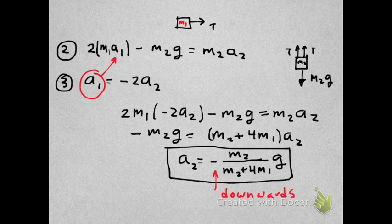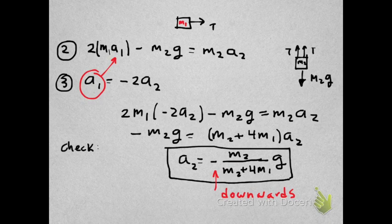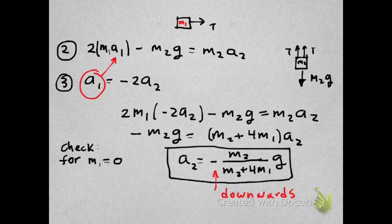Notice that we got a minus sign there which is important because we do know that block 2 is moving downwards. So the acceleration, because we picked the positive y-axis upwards, must be negative. Another check that we can perform on our final answer for A2 is to see whether it makes sense for M1 equals 0. We get that the acceleration 2 is equal to minus G, which clearly makes sense. If block 1 has no mass, it's not even there. So there's nothing to slow down the downwards motion of M2 which should be freefall.